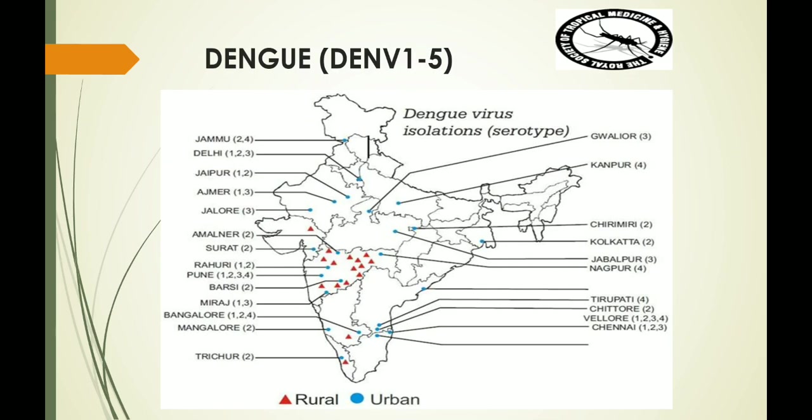As is evident from this map, the serotype distribution generally does not have a specific geographical pattern but is seen throughout India. However, it is useful for epidemiological surveillance purposes to determine the nature of the clinical infections and also the prognosis for the treatment of infections.